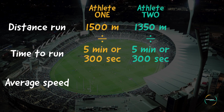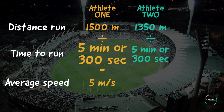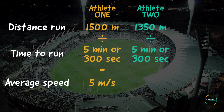To work out MAS, divide the distance run by 300 seconds. For athlete one, MAS equals 5 meters per second (1500 ÷ 300). For athlete two, MAS equals 4.5 meters per second (1350 ÷ 300).